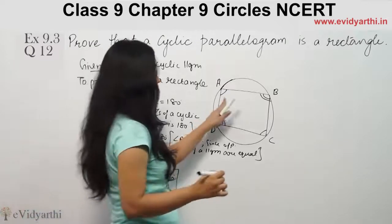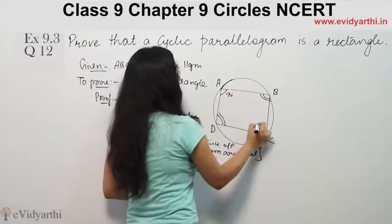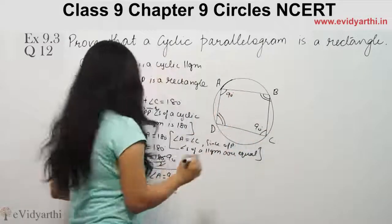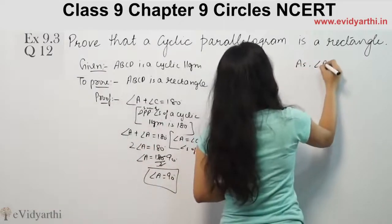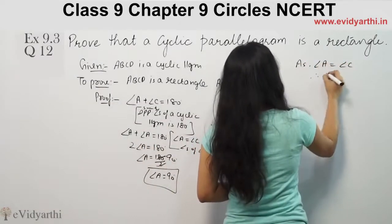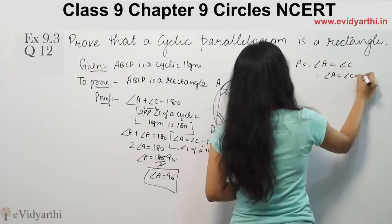Since angle A is 90 degrees and angle A equals angle C, therefore angle C is also 90 degrees.